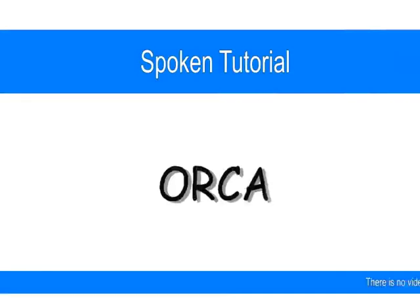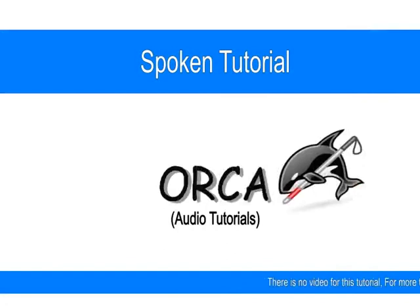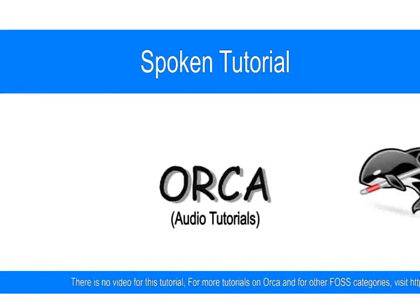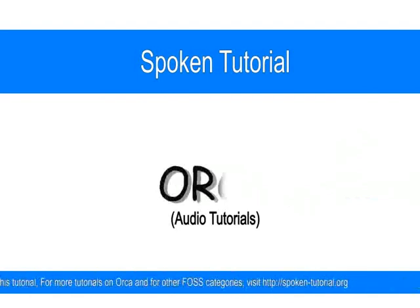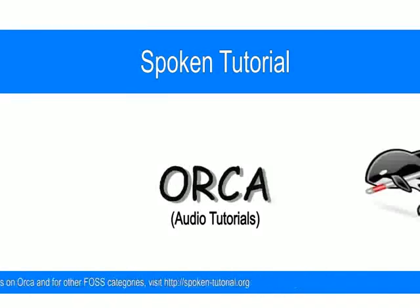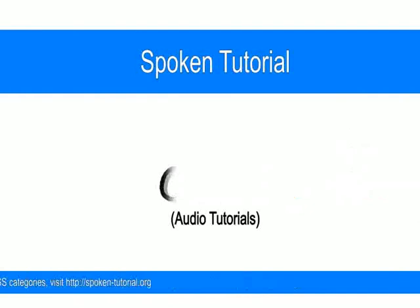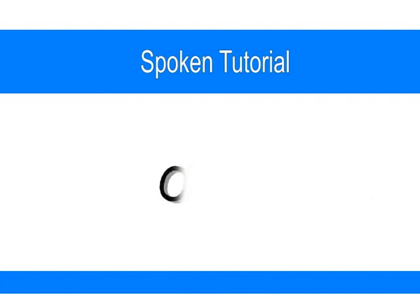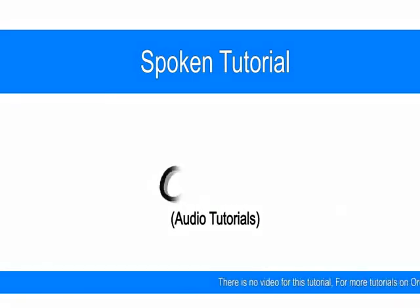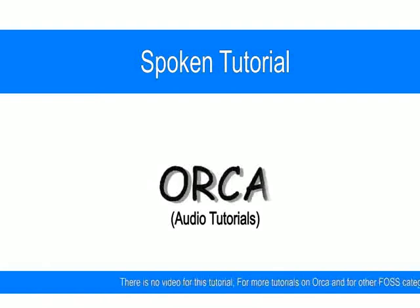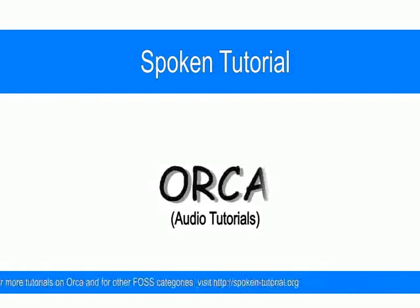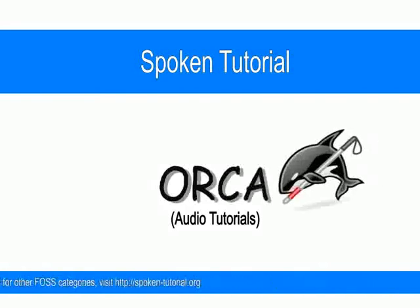Hello and welcome to this tutorial in the spoken tutorial series on Orca. By now, you have already experienced how Orca responds to keyboard commands. We also know that Orca gives classic audio feedback on pop-ups and dialogue boxes which ask for some action to be performed. So now let's move on to something more interesting. We press Alt plus F2 to get to the Run dialog and then enter Orca.